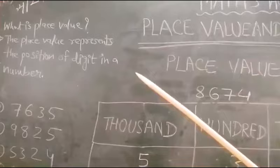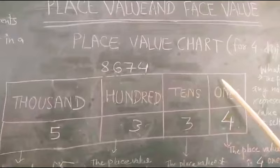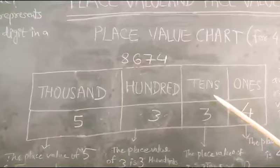Let us take the number 8674. In the 1's place, the place value of 4 is 4 ones. In the 10's place,